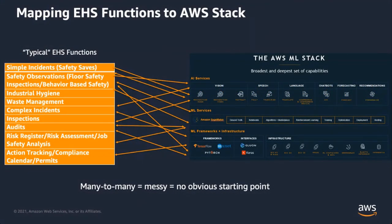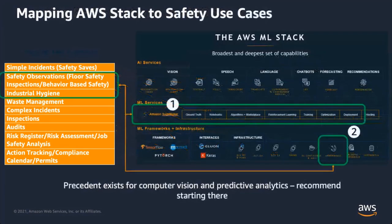Looking at typical EHS functions — industrial hygiene, waste management, complex incidents — any can be achieved with machine learning capabilities, but it's probably going to be a combination. This can lead to analysis paralysis if you've got many things to do and many services. What we'd recommend is to focus on one specific use case. In this case we'll focus on safety observations, and from there identify that we need two sets of services: Amazon SageMaker for all model training through deployment, and AWS IoT Greengrass to take that trained model and deploy it to the edge.